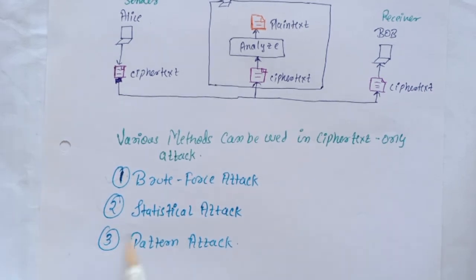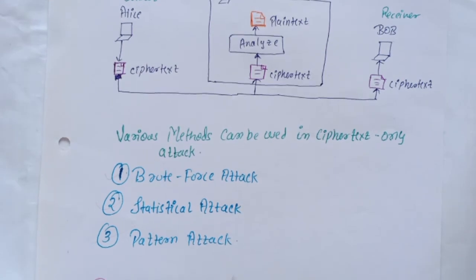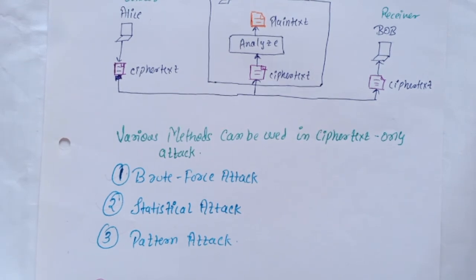Next is pattern attack. Some ciphers may hide the characteristics of the language but may create some patterns in the ciphertext. A cryptanalyst may use a pattern attack to break the cipher. Therefore it is important to use a cipher that makes the ciphertext look more random and no pattern can be seen.